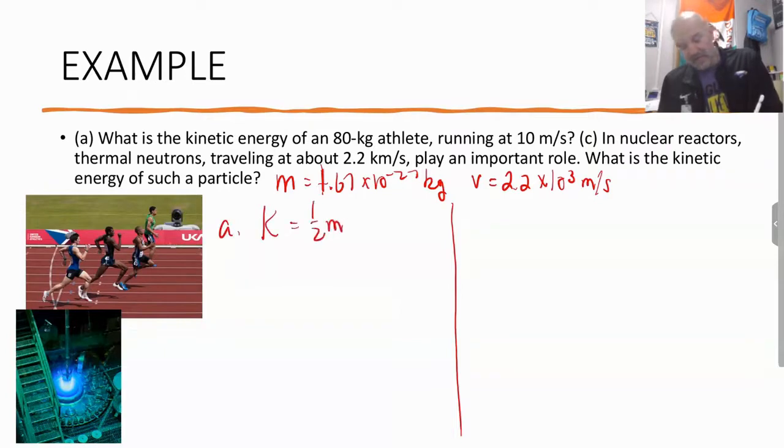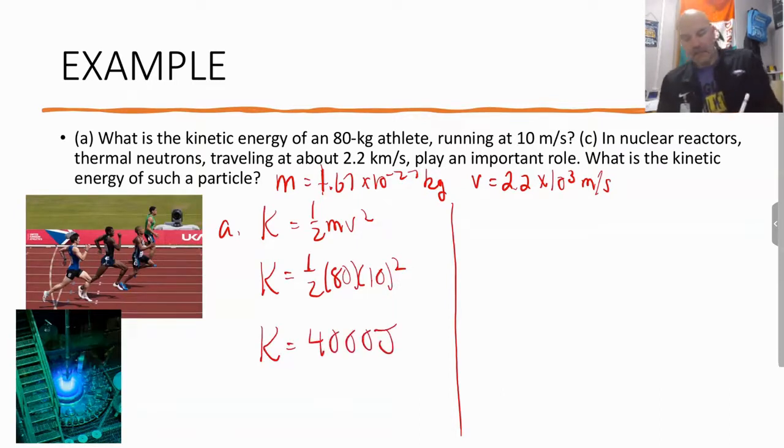Let's do part A, the 80 kilogram athlete. K equals one half mv squared. K is one half times 80 times v squared, which is 10. So they will have a kinetic energy of 4,000 joules. Again, no different than what was done in a Physics 1 course.